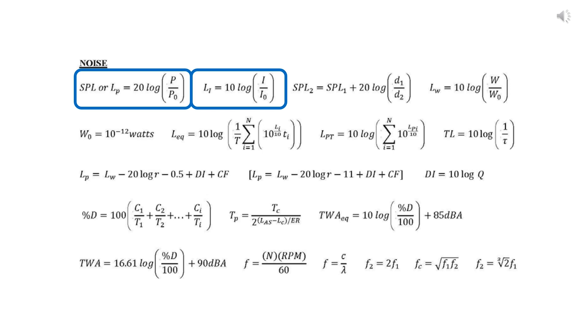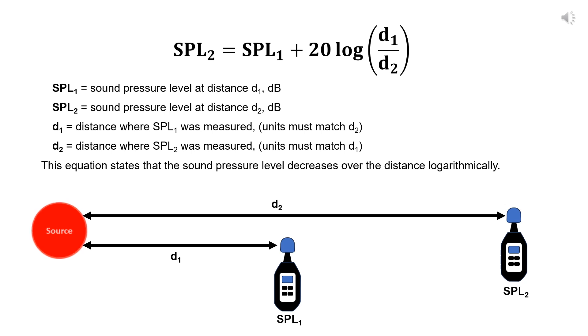Now let's go to the third equation. This equation states that the sound pressure level decreases over the distance logarithmically. The distance that the sound wave travels depends on the environment. Sound can travel through air, water or other materials. The sound pressure level decreases with distance. As you can see in the animation, the sound pressure level at distance 1 is higher than the sound pressure level at distance 2.